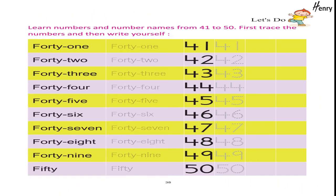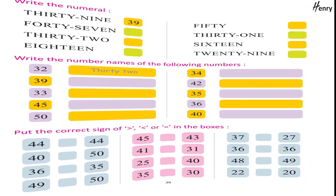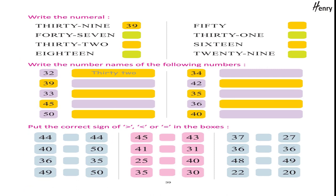Learn numbers and number names from 41 to 50. First trace the numbers and then write yourself: 41, 42, 43, 44, 45, 46, 47, 48, 49, 50. Write the numeral. Write the number names of the following numbers. Put the correct sign of greater than, less than, or equal to in the boxes.